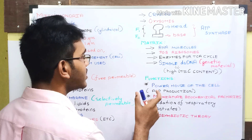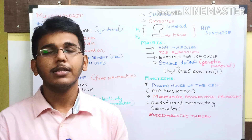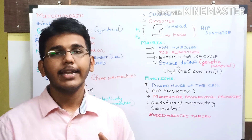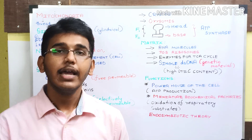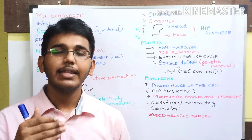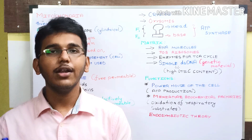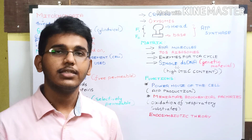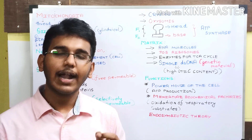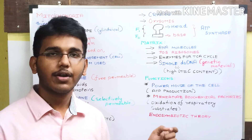Mitochondria is called the powerhouse of the cell because it helps in the production of ATP via the electron transport chain and ATP synthase enzyme complex. It is also called a biochemical factory because it is the ultimate site where all respiratory substrates — carbohydrates, amino acids, and fats — undergo final oxidation to release energy. The beta oxidation of fatty acids also occurs in the mitochondria.